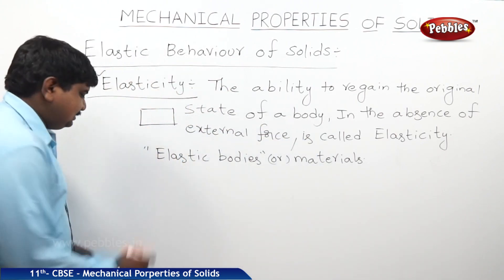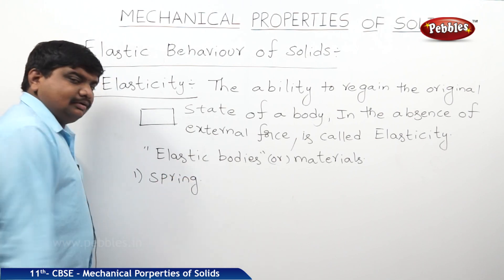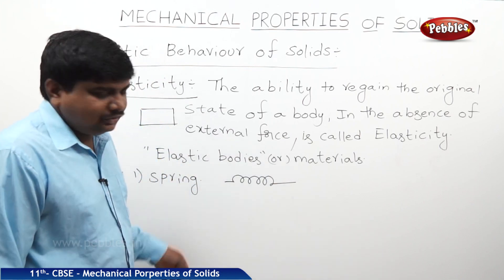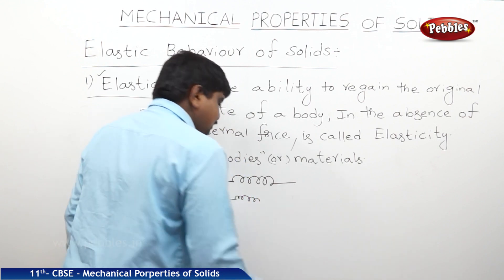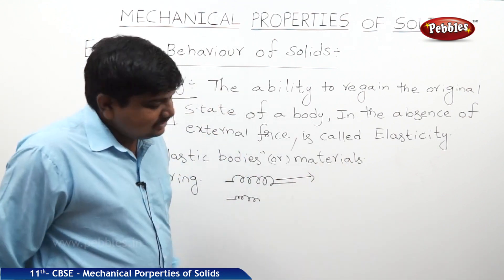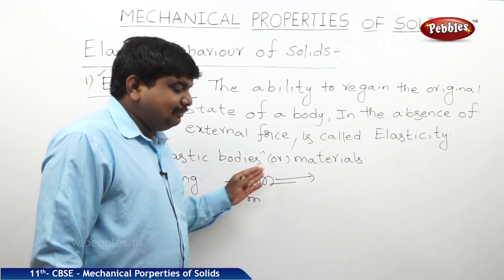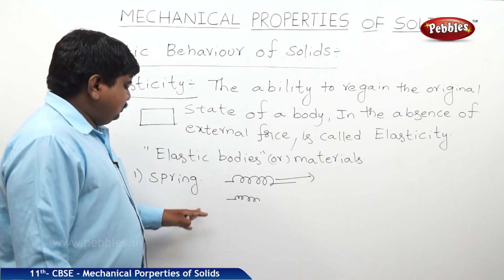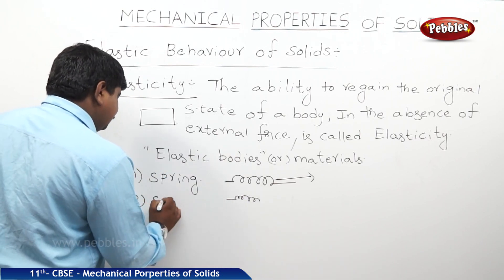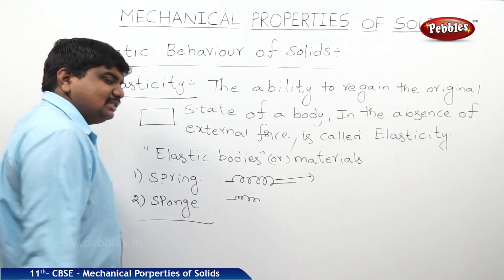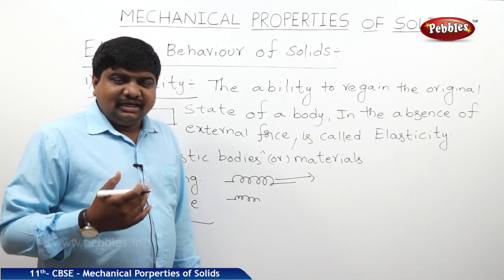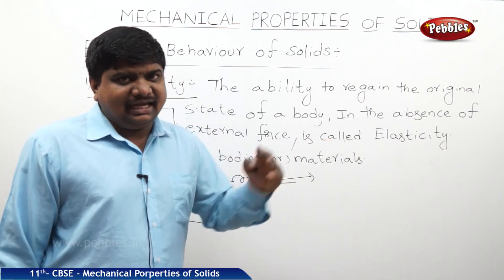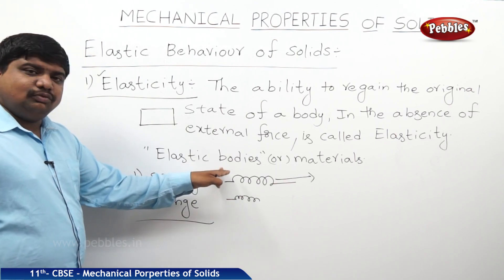Materials which exhibit this property are called elastic bodies or elastic materials. Examples of elastic bodies: the best example is a spring. If you take a spring in a uniform shape and apply force from one end, it will compress; if force is applied in the forward direction it expands. After removal of the external force, the spring automatically regains its original state — original length, original area, and original volume. Another example is sponge. If you apply force on one end and then remove the force, the very next moment the sponge regains its original state — original length, volume, and area.